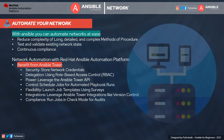Network automation is very complex when it comes to device configurations — you need to ensure you have deployed the correct configuration, and hundreds of services could be affected by a single mistake, which is one of the most challenging things for network and DevOps engineers. With Ansible, you can automate and reduce the complexity of long, detailed, and complex method of procedures — or MOPs — which are the steps used as part of network deployment. You can easily test, validate existing network state and services, and maintain continuous compliance using the Red Hat Ansible Automation Platform with Ansible Tower.